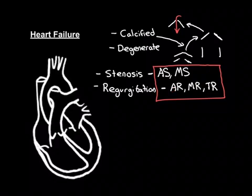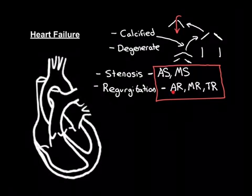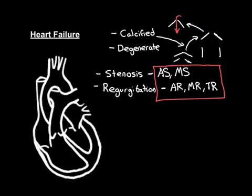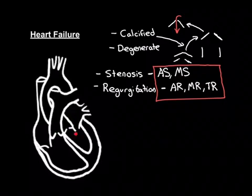Aortic regurgitation: the left ventricle pumps blood out fine, but then a whole bunch of it comes back in, meaning the net forward flow is reduced and cardiac output falls — heart failure. Mitral regurgitation: blood flows back the wrong way, another example of left heart failure which could also lead to pulmonary oedema.